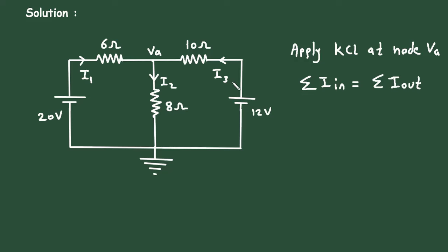Now here we can see the entering currents at this node: I1 is the entering current and I3 is the entering current. So here we can write I1 plus I3. And the leaving current is I2.